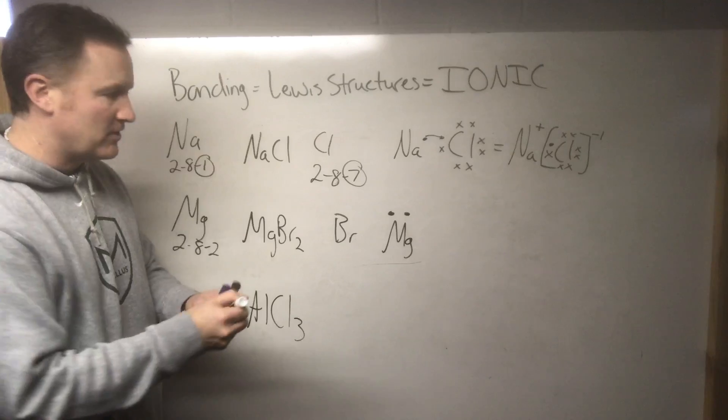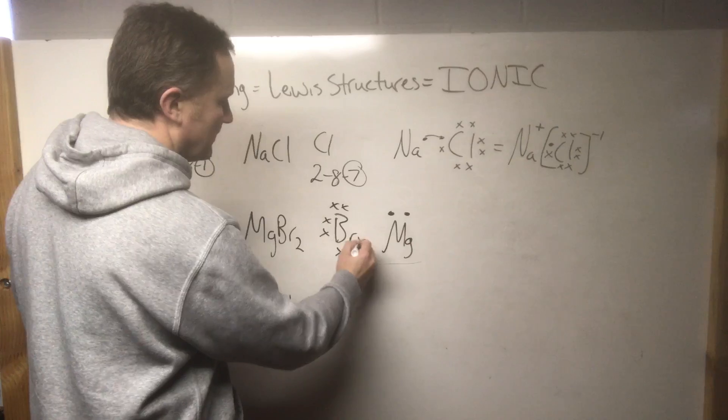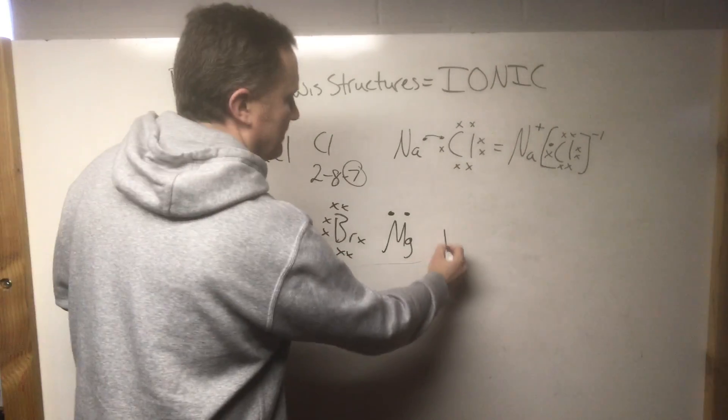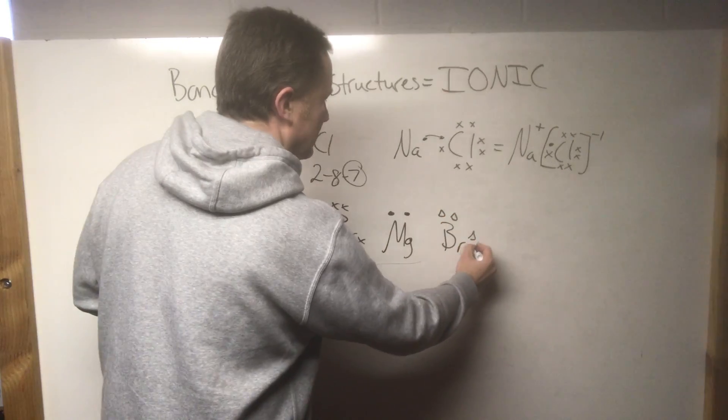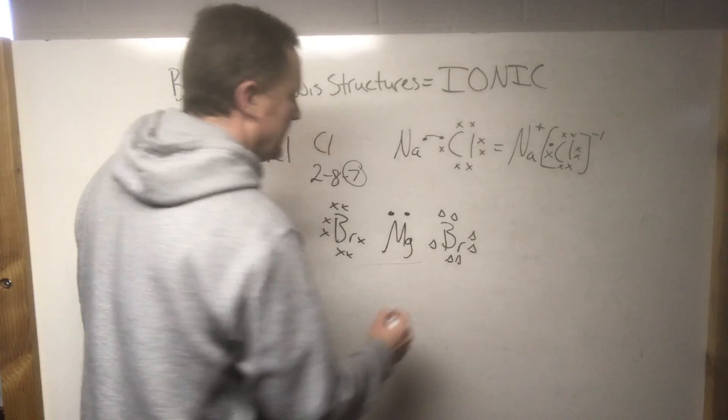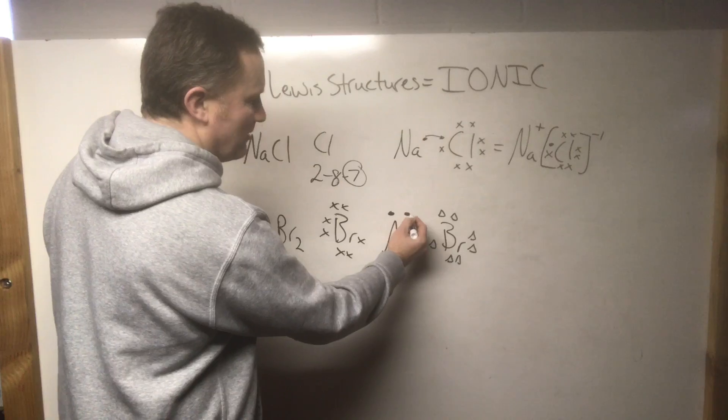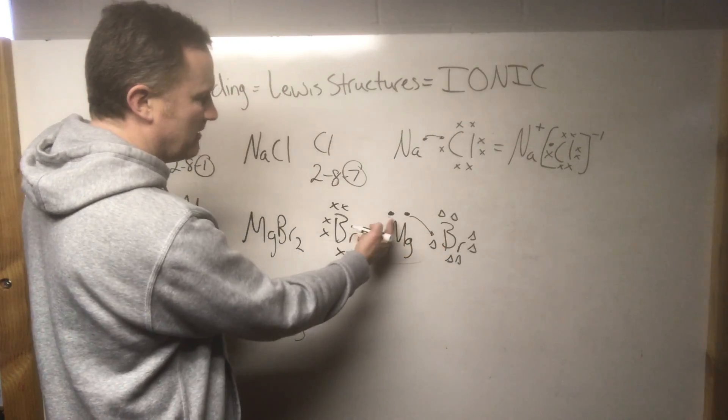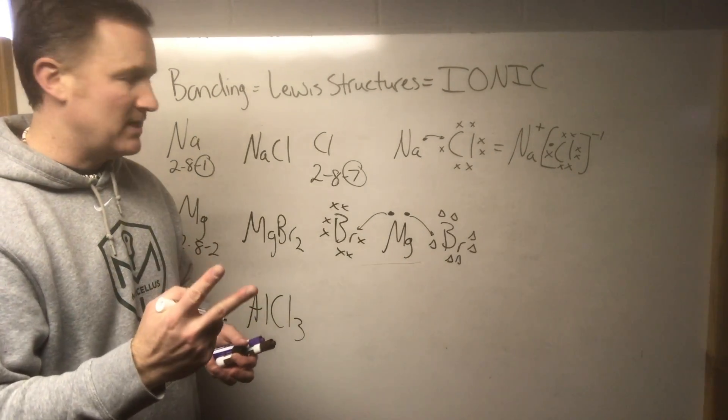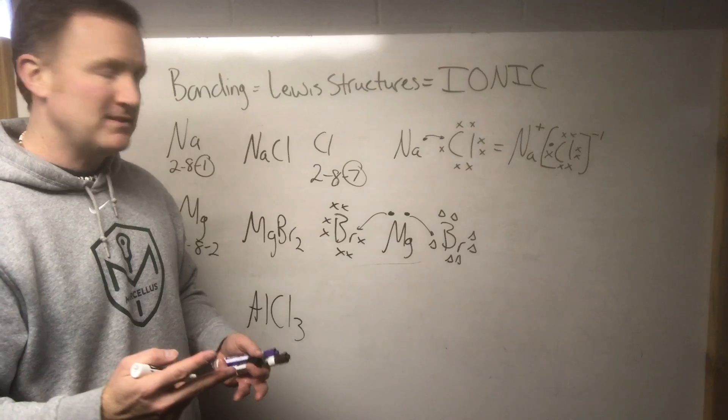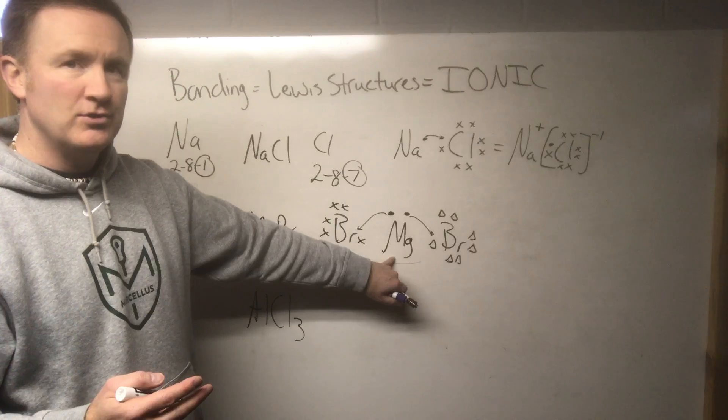We're going to use different symbols just to show that they're coming from different elements. We'll use the X's again, so bromine has seven. In this bromine we'll use little triangles that also has seven. Each of them is missing one—they want to meet the octet. So this bromine is going to take one of the electrons, that's going to go over there. This bromine is going to attract one of the electrons, it's going to go over there. In the process, magnesium is going to lose two electrons. When you lose two electrons, instead of like sodium—sodium lost one and became plus one—magnesium is going to lose two and become plus two.